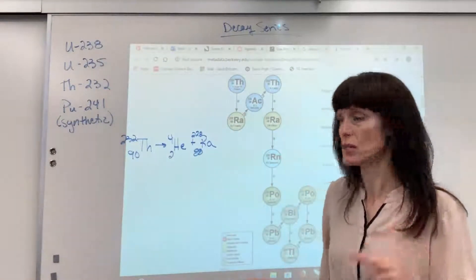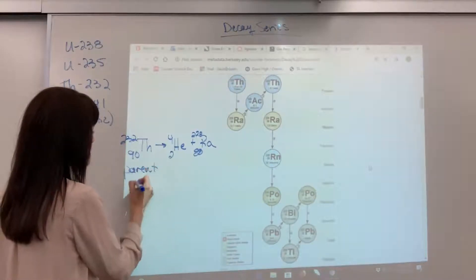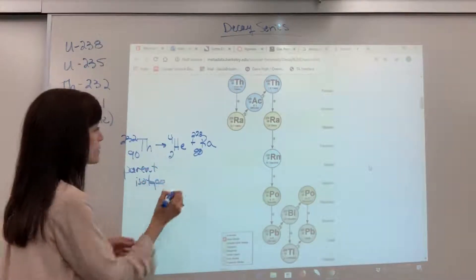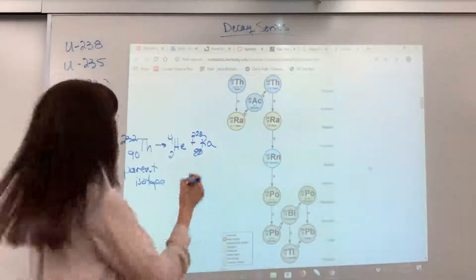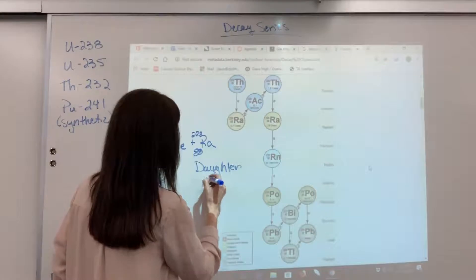Now two terms that you'll want to know. Whatever's on the reactant side is called the parent isotope, and whatever is on the product side is called the daughter isotope.